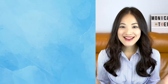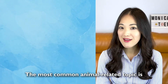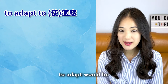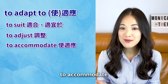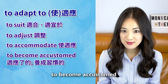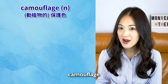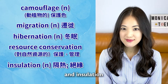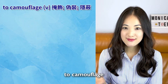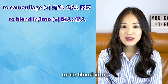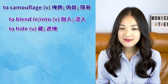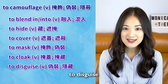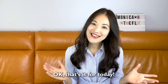Let's review. The most common animal-related topic is adaptation. Other ways to say 'to adapt' include: to suit, to adjust, to accommodate, and to become accustomed. Common types of animal adaptation include camouflage, migration, hibernation, resource conservation, and insulation. Words related to camouflage: to blend in, to hide, to cover, to mask, to cloak, to disguise, to conceal.